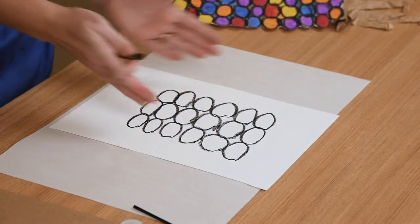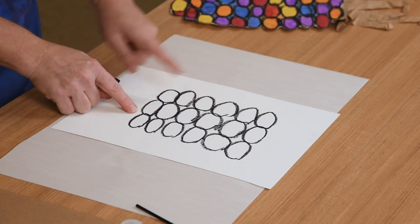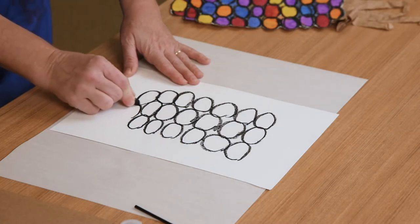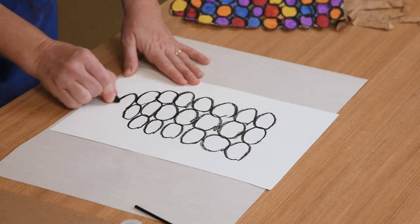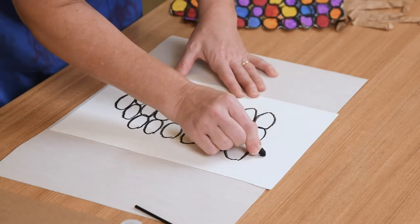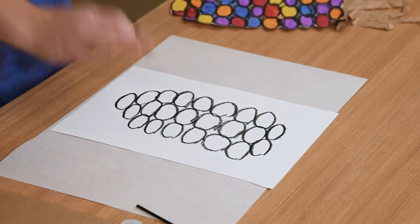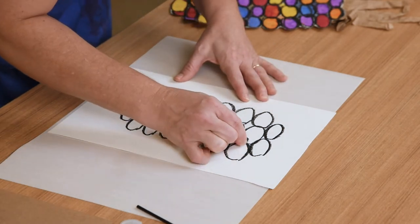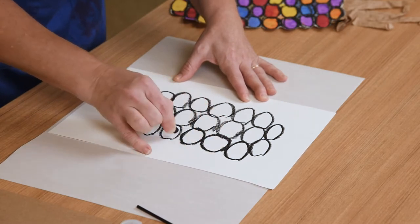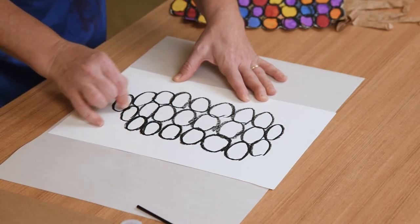Now we're going to bring our corn cob down to a point by doing two ovals in between the spaces of our columns, and then one at the point. I'm also going to put just two at the top here. Now you may want to take a few minutes and go over those with your black oil pastel so that those ovals are nice and dark. That's going to help them show up as we start to add paint.